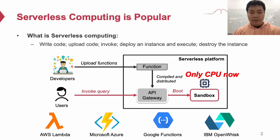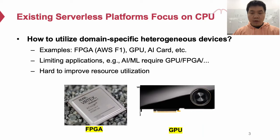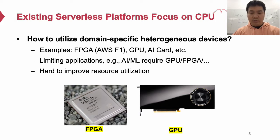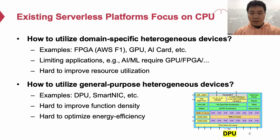However, a significant limitation of existing serverless platforms is that they can only support CPU functions. Although there are many kinds of heterogeneous devices, existing serverless platforms still cannot utilize these devices, which leads to several challenges. First, serverless platforms cannot utilize domain-specific devices like FPGA and GPU. This makes applications like machine learning hard to run on serverless platforms as they rely on accelerators for good performance. Besides, serverless platforms cannot utilize general-purpose devices like DPU and SmartNICs. As a result, it is hard for platforms to achieve higher function density and better energy efficiency because they can only utilize CPU to run functions.